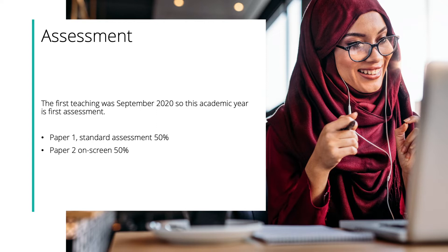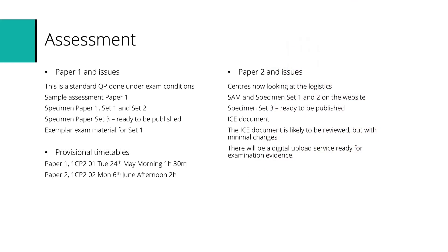Paper one is a standard assessment — 50% of the qualification — in exam hall conditions. Paper two is very different; it's on-screen. For paper one, we have sample assessments as well as specimen paper sets one and two, so we have three sets of practice papers on the website. The sample assessment material is not padlocked, so specimen sets one and two are very useful to use as mocks and semi-formal in-house assessments.